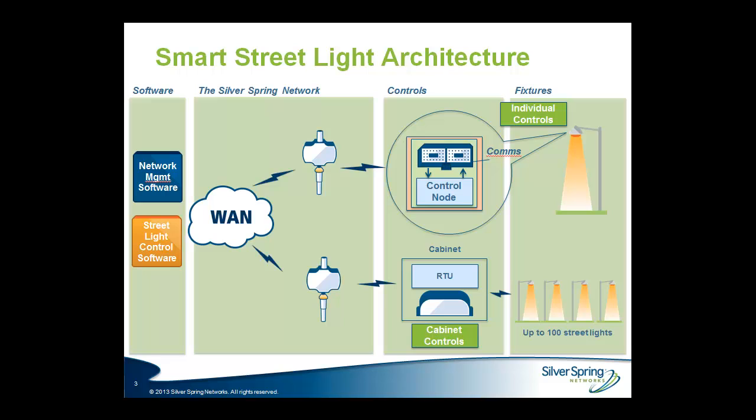The solution has software components on the left-hand side, comprising two key aspects. First, the network management suite allows customers to connect smart streetlights — whether individual fixtures or banks — to be provisioned to the network, manage firmware, allow for connectivity, provide reports, diagnostics, and more. Alongside this is the streetlight control software, which enables more intelligent management of the lighting fixtures to save energy and reduce operational expenses.